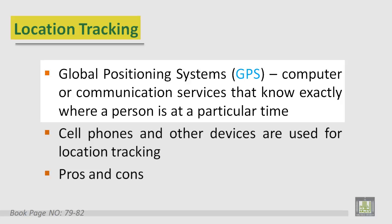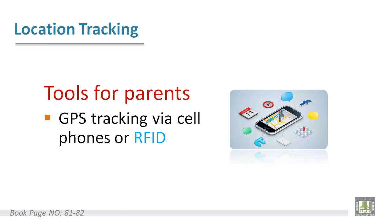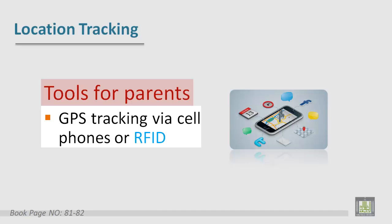Location tracking: the Global Positioning System, or GPS, is a communication and location service that knows exactly where a person is at a particular time. Cell phones and other devices may be used for this service. There are many advantages and disadvantages of location tracking. For example, GPS tracking via cell phones or RFID — Radio Frequency Identification — can be used as a tool for parents.